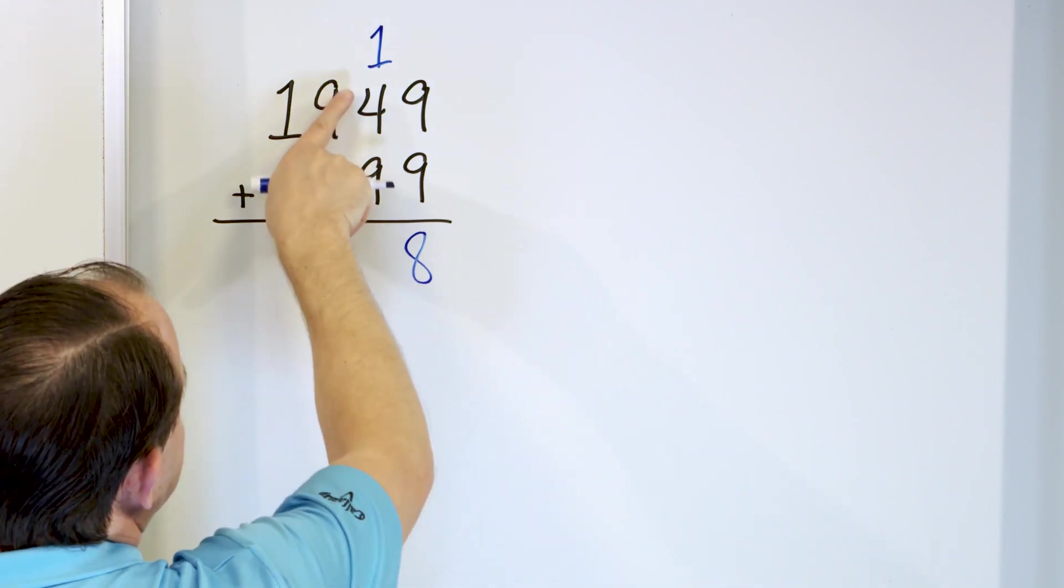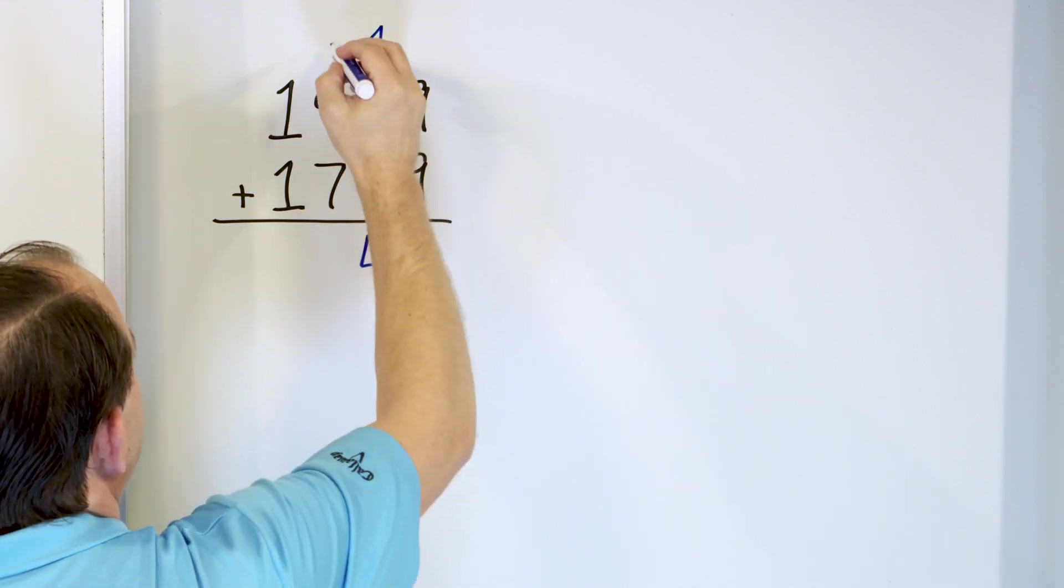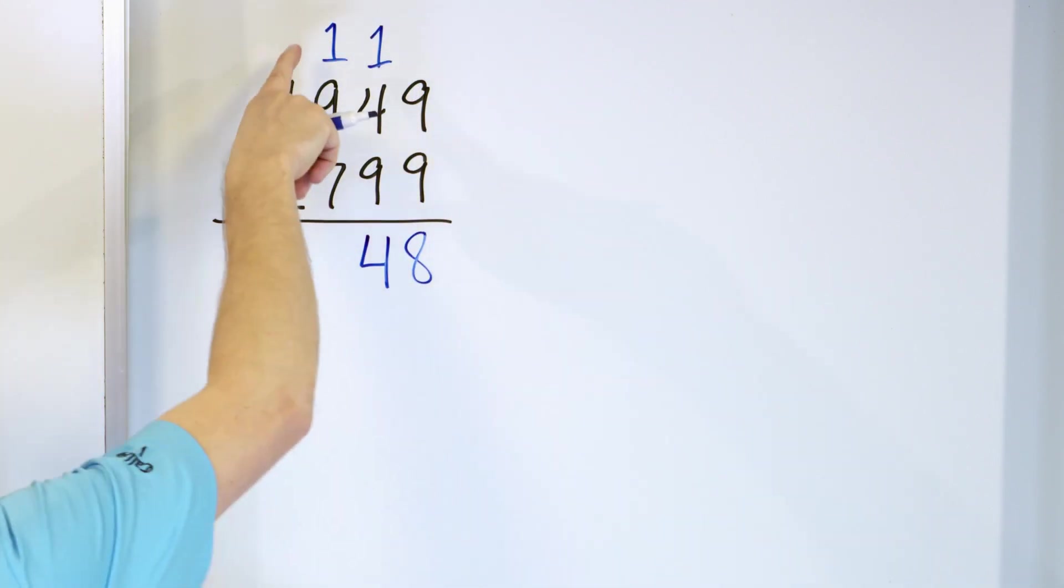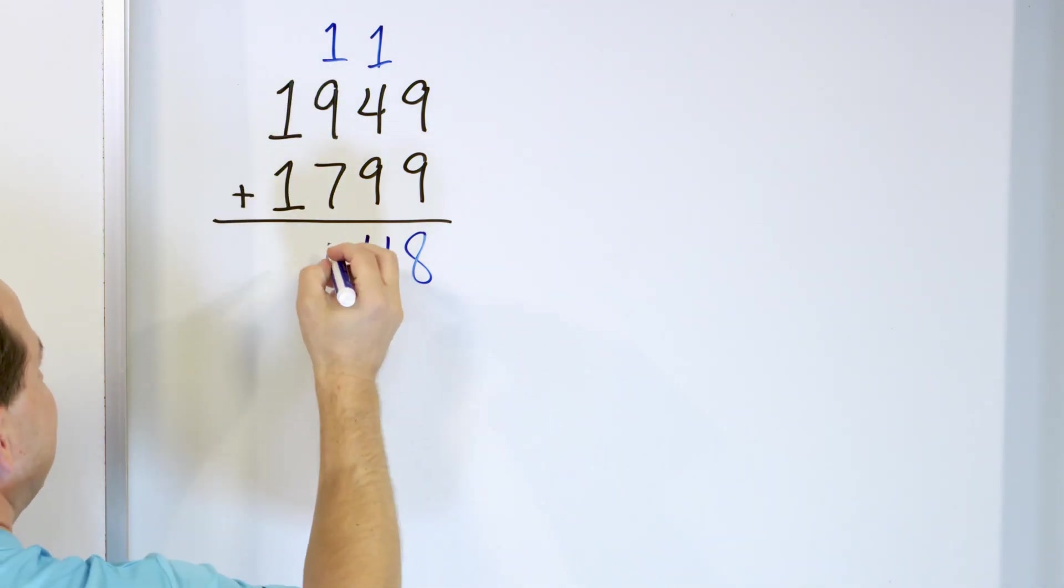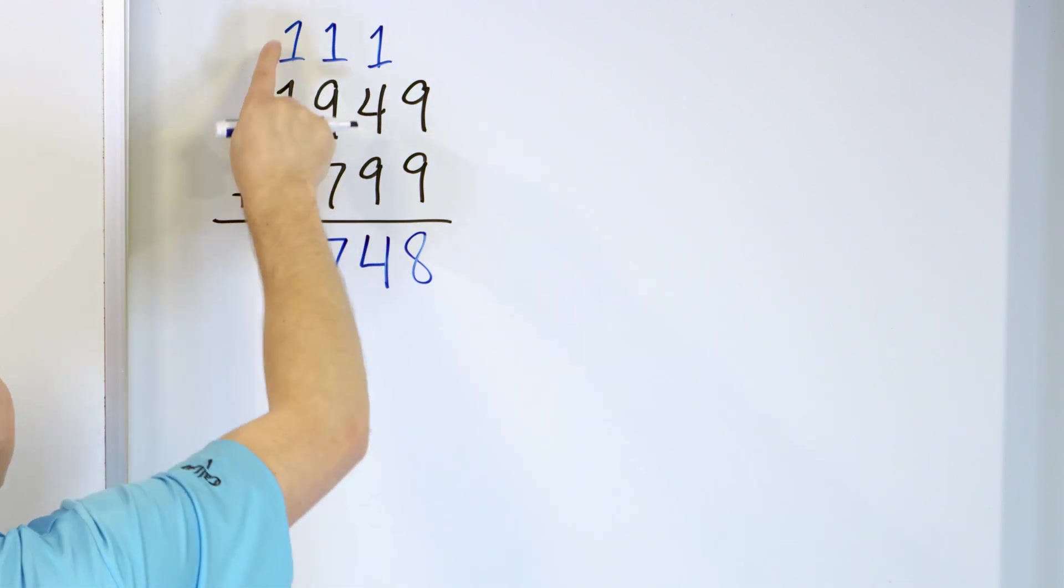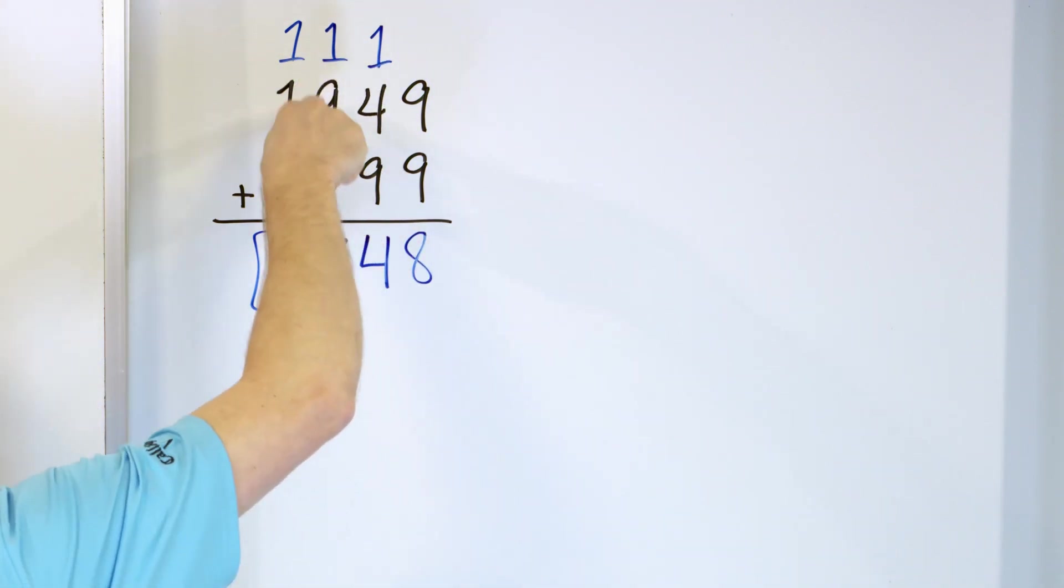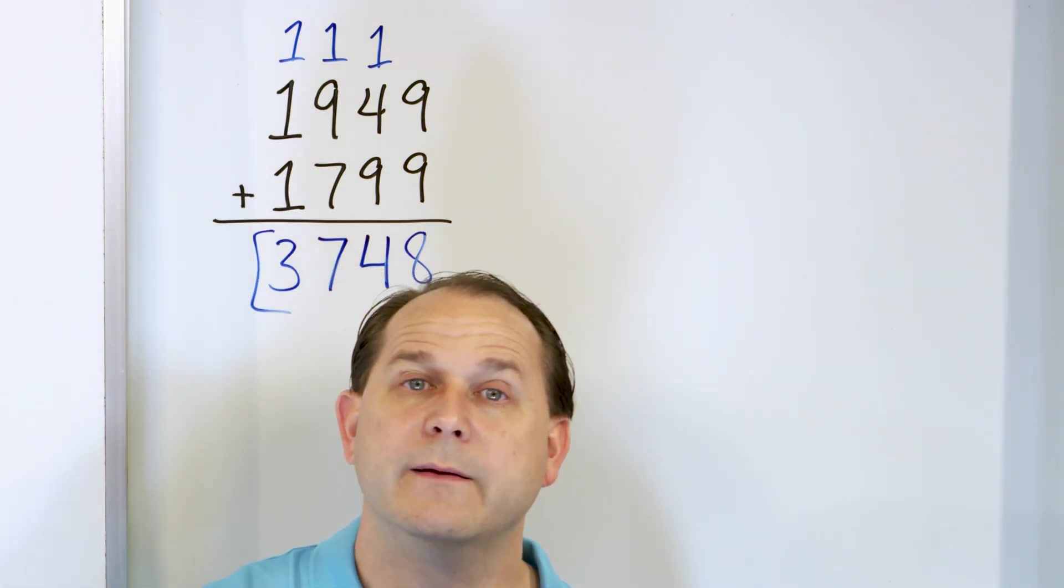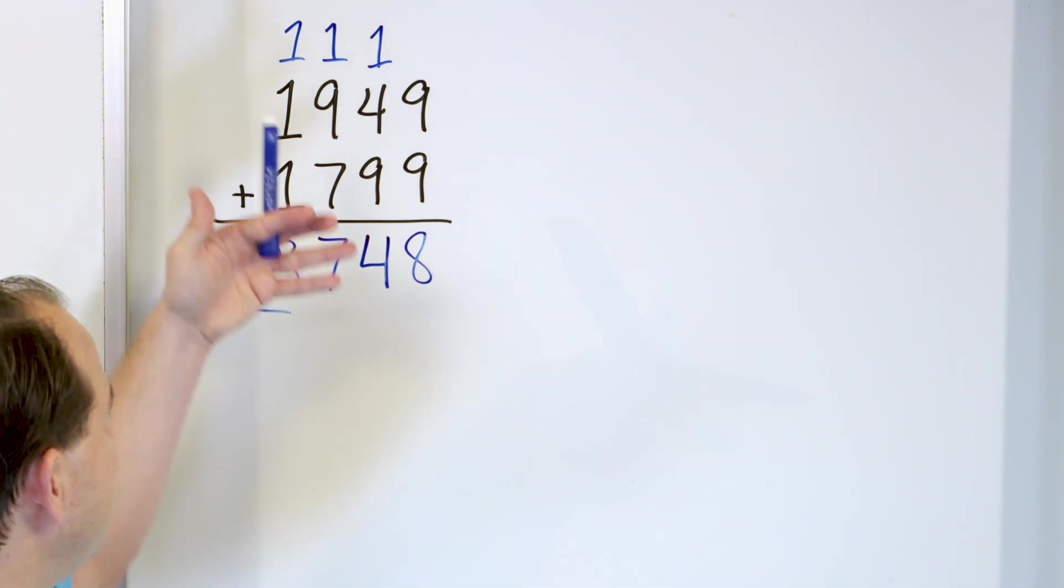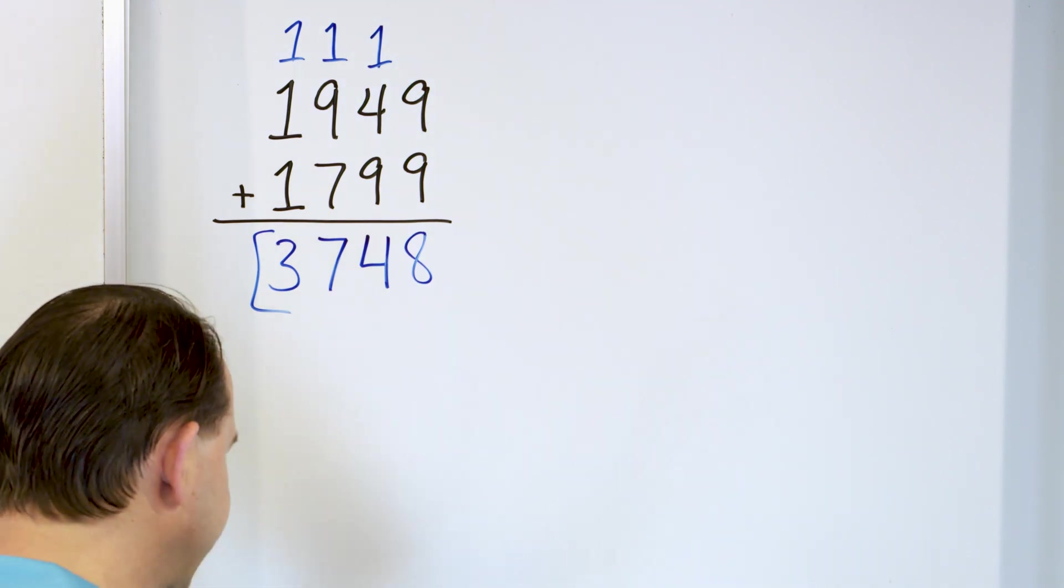So here we have 9. This is 10. And then 10 plus 4 is the 14. So we'll write that as a 4 and we'll carry a 1. Easiest way to add this is to know that these make 10. 9 plus 1 is 10, of course. And then plus the 7 is 17. So you write that as a 7, carry the 1. And then 1 plus 1 plus 1 is 3. So you get 3,748. You know, this step right here, if you go 9 plus 7 and then add the 1, it works fine, of course. You can add them any way you want. But it's easier if you just go ahead and make the 10 first and then the 7 because getting the 17 is just much easier to think about.